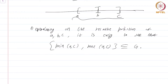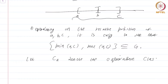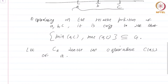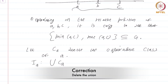So now that we have an equivalence relation, let C_A denote the equivalence class of A. I define I_A to be the union of C_A.